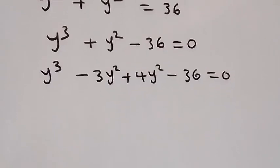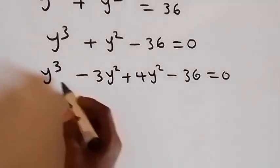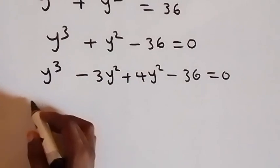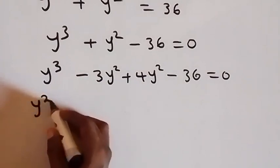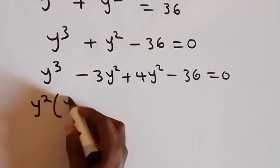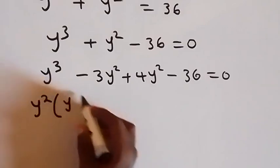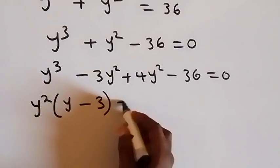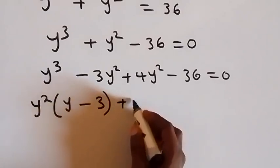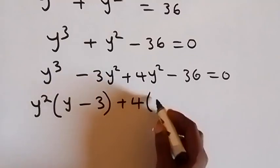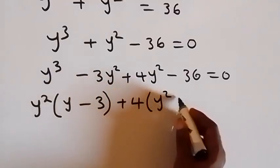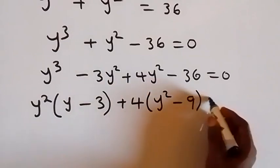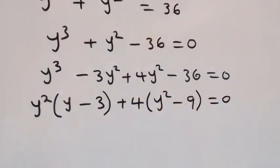Then from here, we can group this together and factor y squared out. So we have y squared into bracket y, then minus 3, then plus 4 is common here. We have y squared minus 9, which is equals to 0.